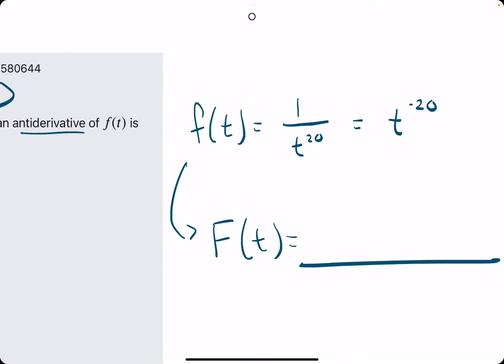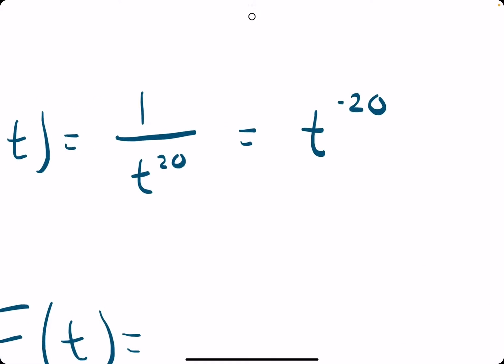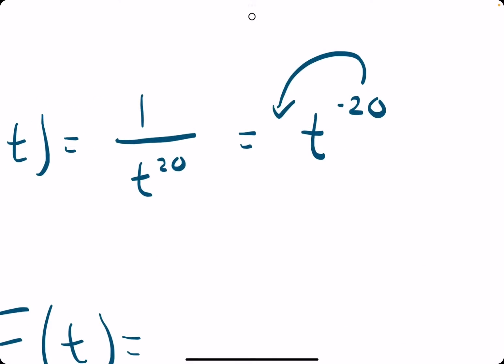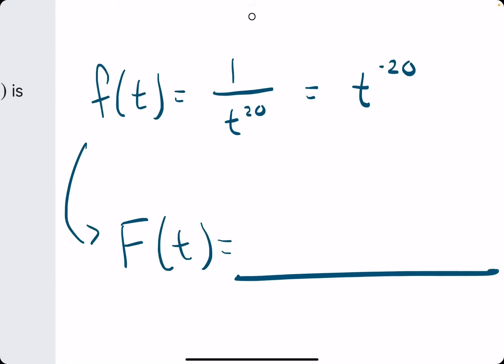So, how do we go about this? We want to do sort of the opposite of the power rule that is used to find the derivative. If we are finding the derivative, we bring out the negative 20, subtract it by 1, and that would be the process. We sort of do that in reverse order in the opposite way. Rather than subtracting 1 from the exponent at the end, we want to add 1 to the exponent at the beginning. So, it will be t to the negative 19th.